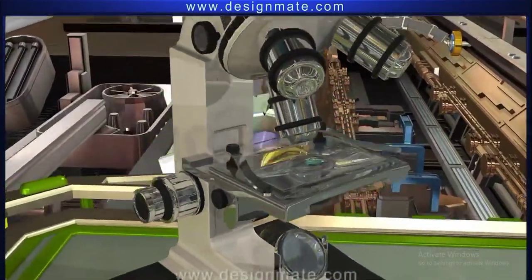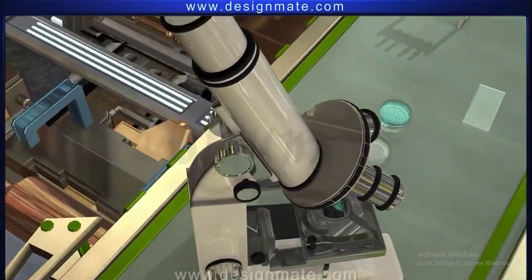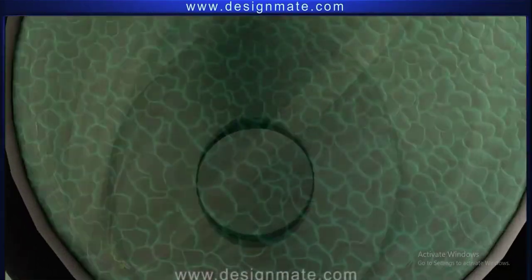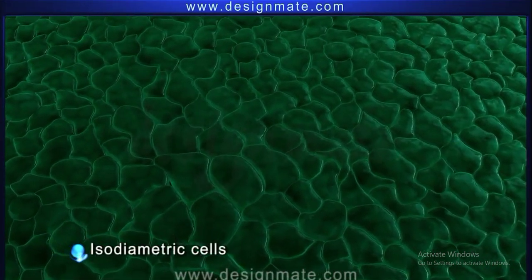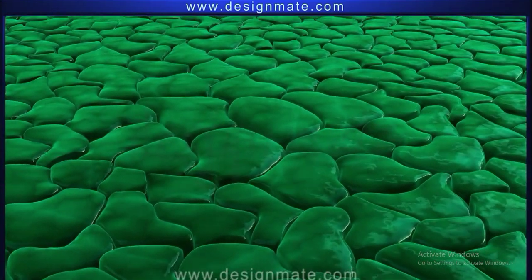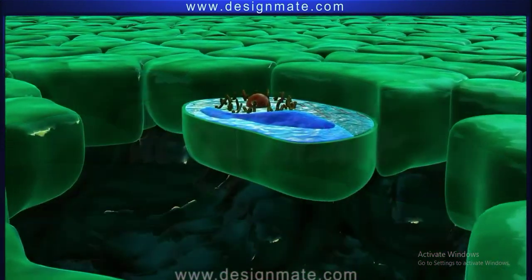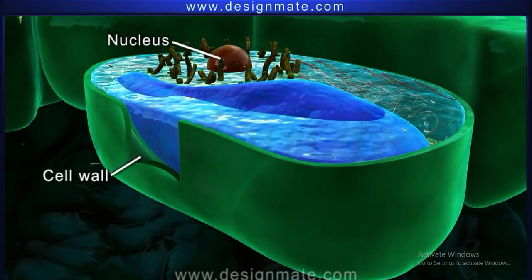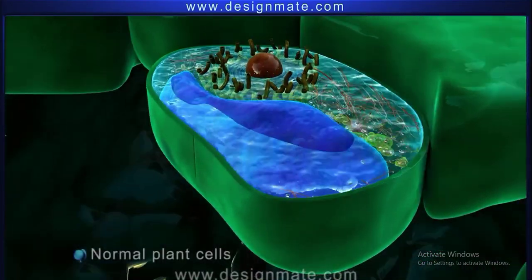On examining the cells under the microscope, we see thick isodiametric cells. These turgid cells show a prominent cell wall and a nucleus. These cells are the normal plant cells.